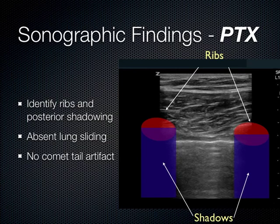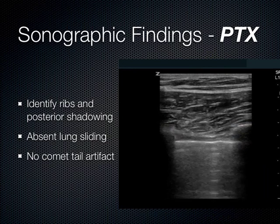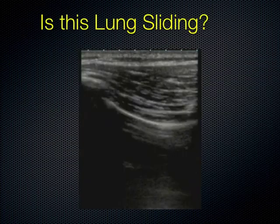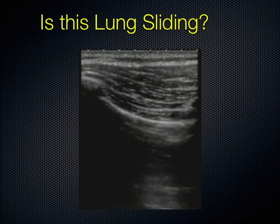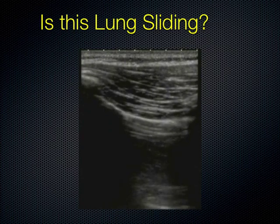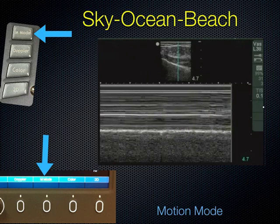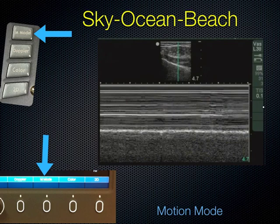If you put an M-mode line through the pleural interface and watch it over time, you get an image we call sky, ocean, beach — also called the seashore sign. The soft tissue creates a striped appearance; the pleural line is bright white like the horizon where the ocean meets the land; and if the lung is sliding underneath that pleural line, you get a grainy effect due to motion — that graininess is the beach. Sky, ocean, beach is normal. If the lung has dropped, the beach disappears because all you're getting are reverberations from soft tissue — you get a barcode or stratosphere sign.